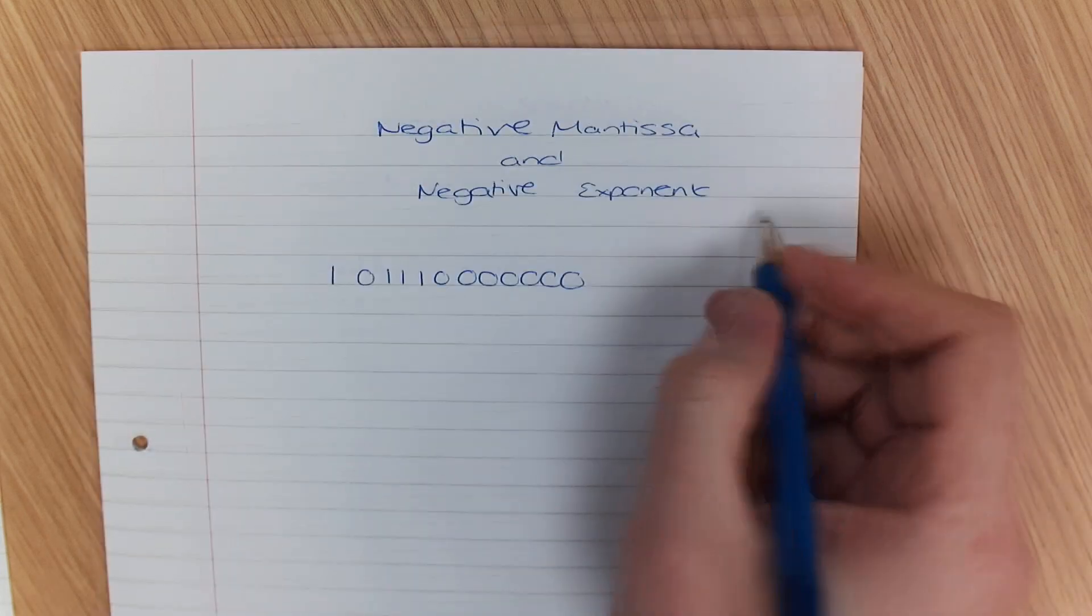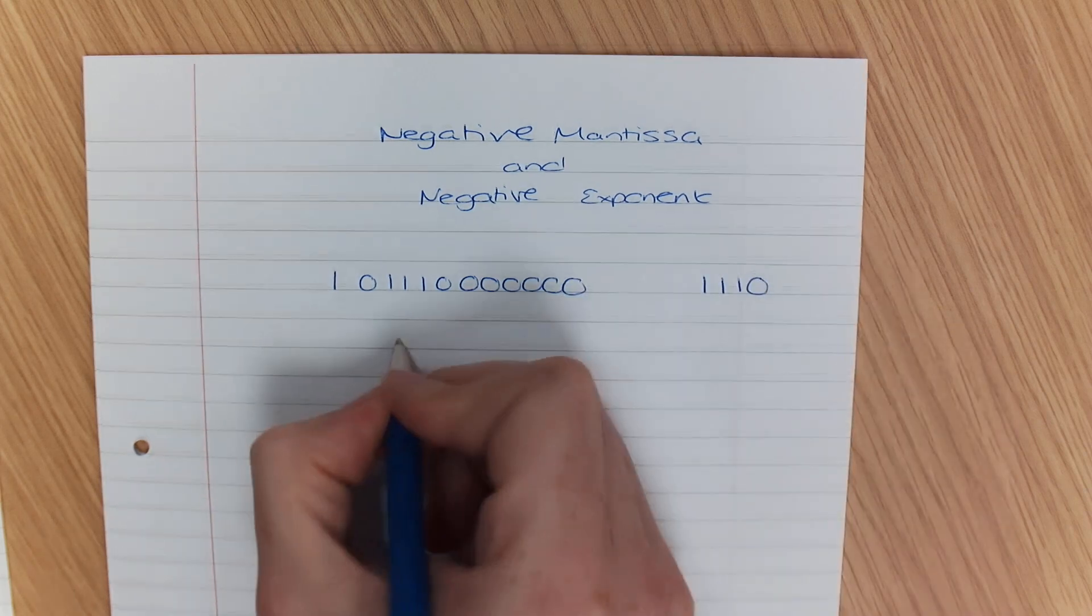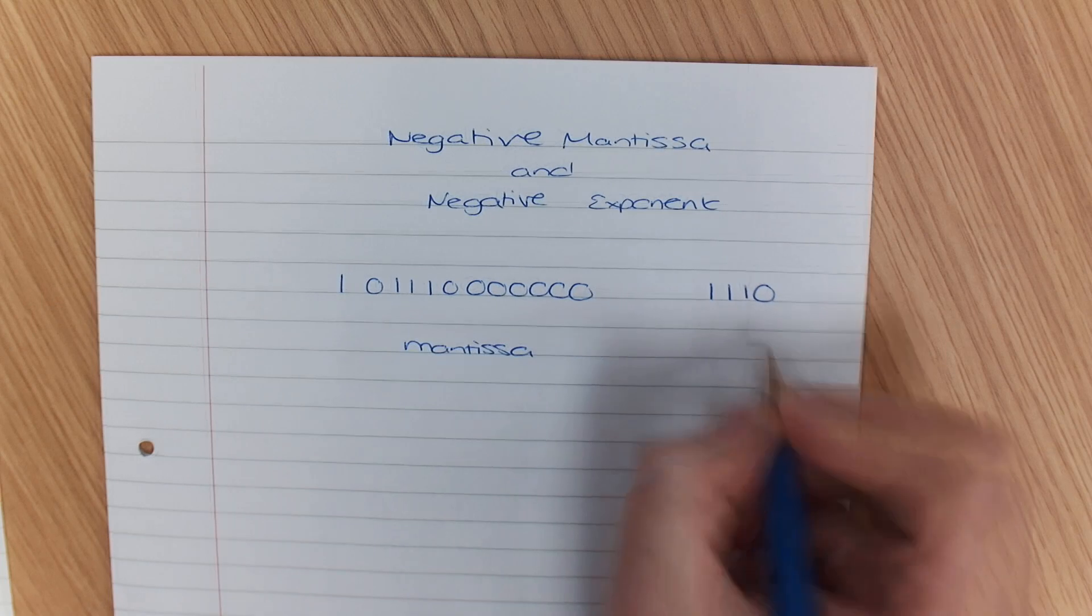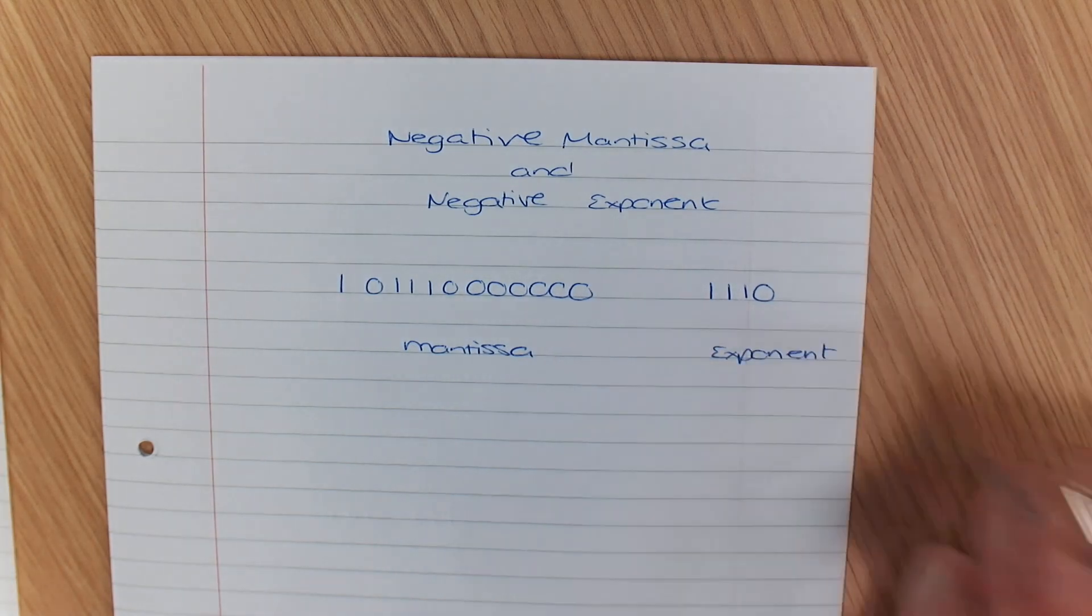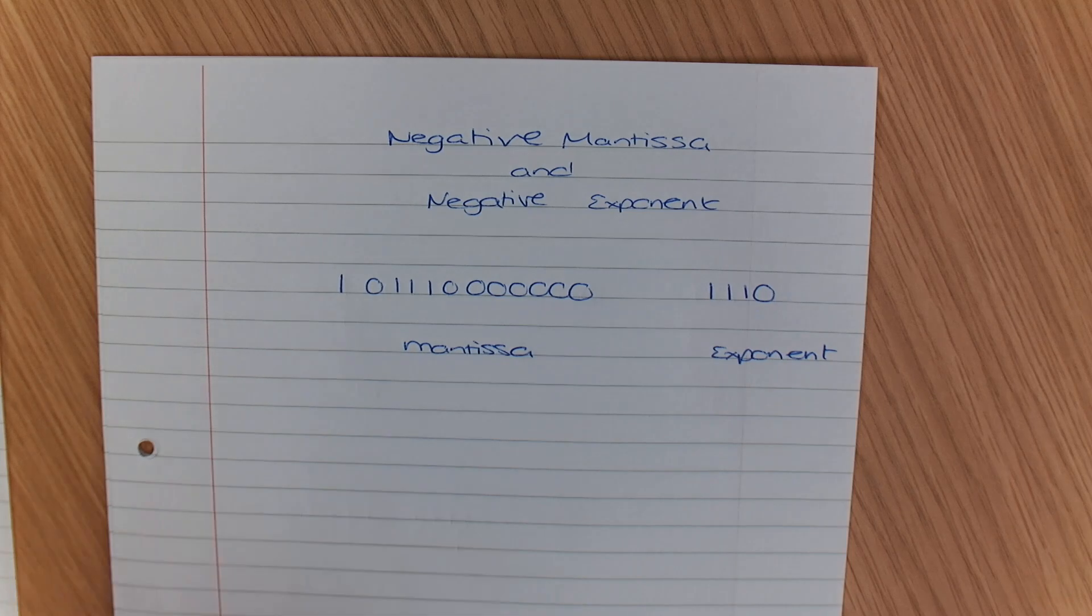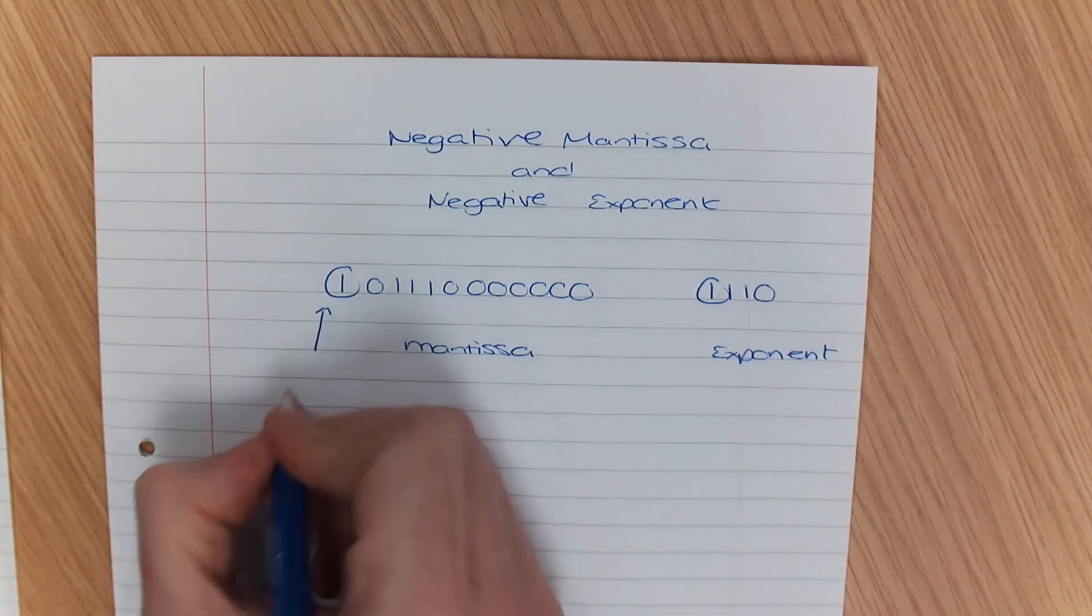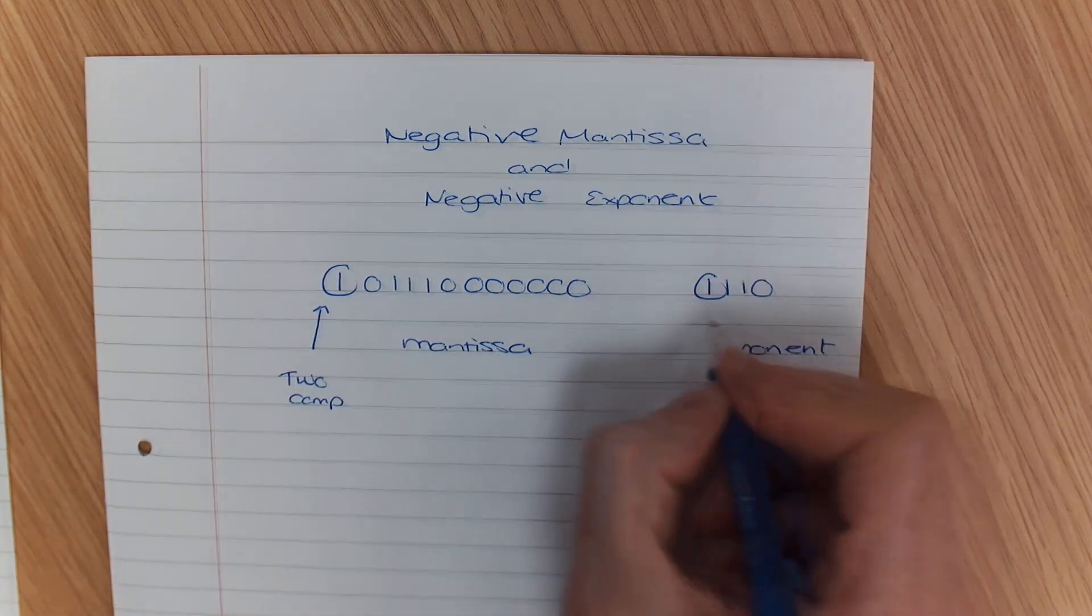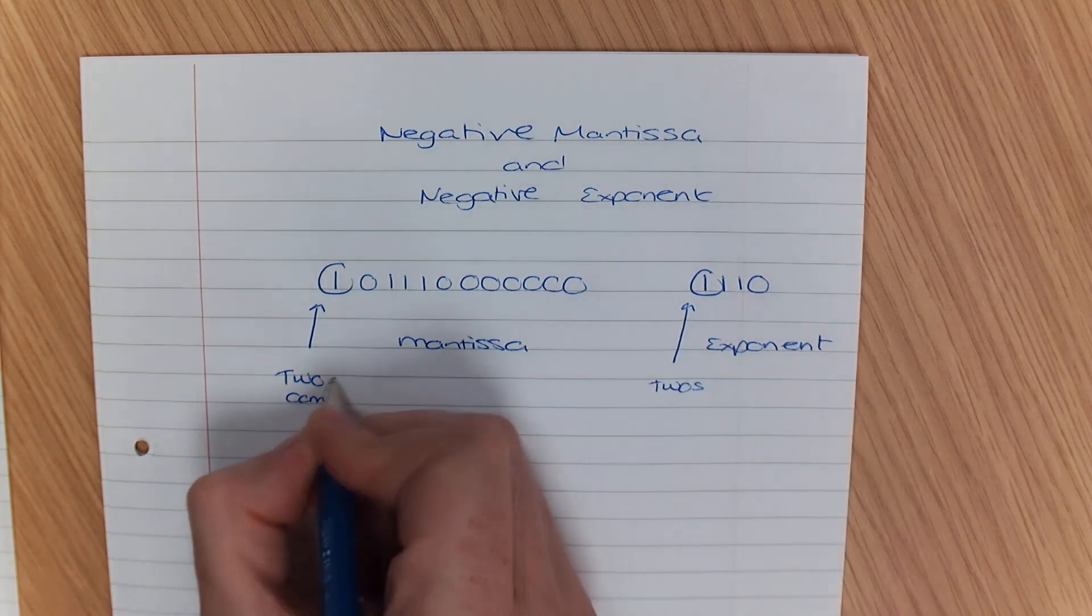Okay, so we've got that, and then we've got our exponent. So we've got our mantissa and then we've got our exponent. Now one thing to make sure that you pay attention to is that we are using 2's complement. Which means, I'm just going to write this in here, 2's comp, 2's complement.